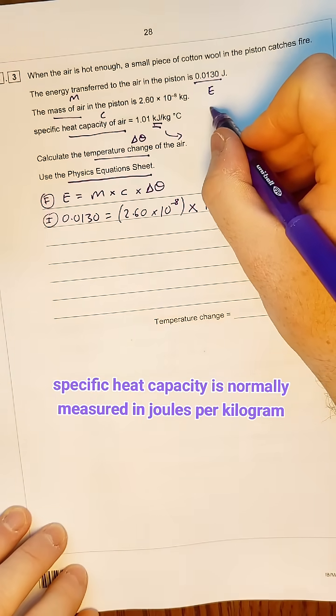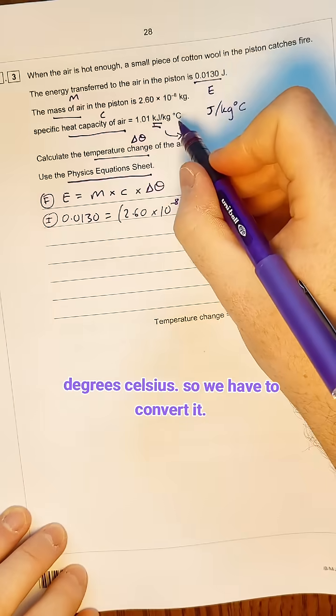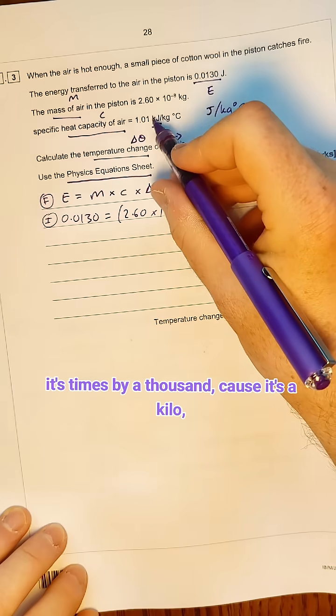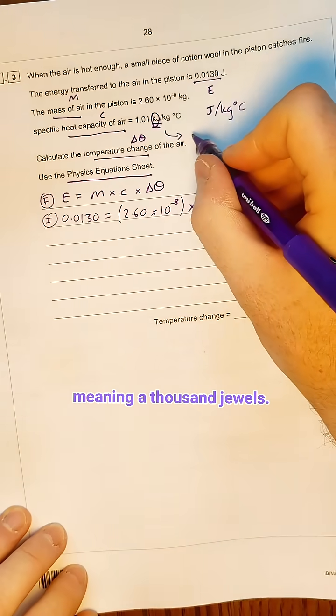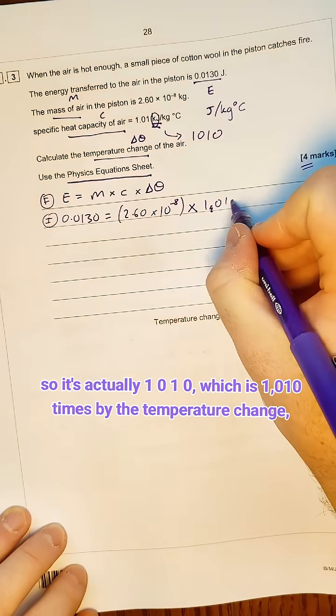Specific heat capacity is normally measured in joules per kilogram degree Celsius, so we have to convert it. So actually, instead of 1.01, it's times by 1,000 because it's a kilo, meaning 1,000 joules. So it's actually 1,010.